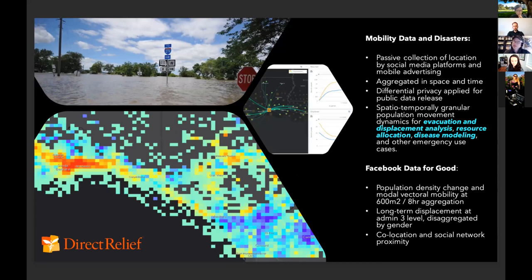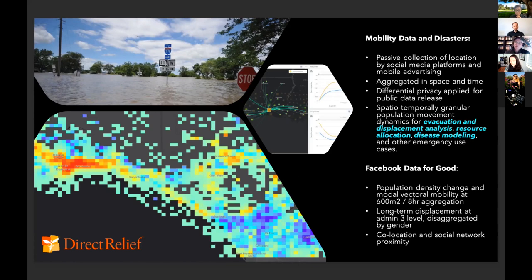This led into thinking that now virtually every problem we respond to at Direct Relief has to understand real-time dynamics and population change. Mobility data in disasters is passively collected, which poses all kinds of interesting operational, ethical, and legal challenges. It's passively collected by social media platforms and advertising technology — when you use your cell phone, it pings an advertising company, which tracks GPS traces and packages those to share with researchers and nonprofits, and also resells it for commercial purposes.